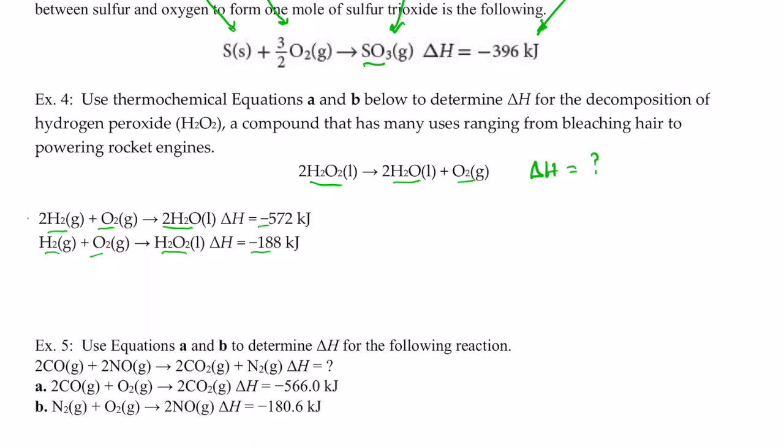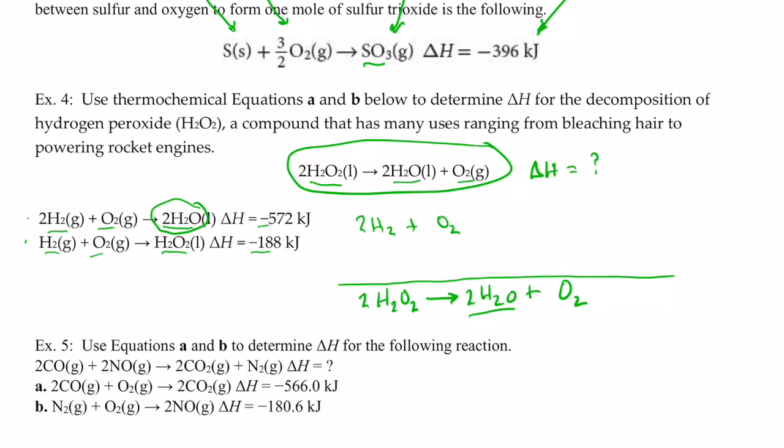So I'm going to use these two equations to add up to the equation that I want. Now, the way I like to do these is I like to draw a line first, and I'm going to put the reaction that I want underneath that line. So two H2O2s react to form two H2Os and O2s. And that's the reaction that I'm after. Now, let's take a look at my first reaction. It has H2O on the product side, which is exactly where I want it. So I'm going to write it as it's written. Two H2s plus an O2 react to form two H2Os.